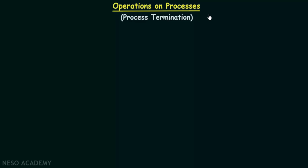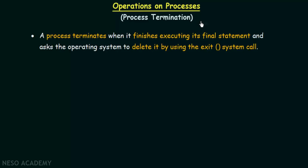From the name itself you can understand that process termination means when a process comes to an end and we are terminating it. A process terminates when it finishes executing its final statement and asks the operating system to delete it by using the exit system call.